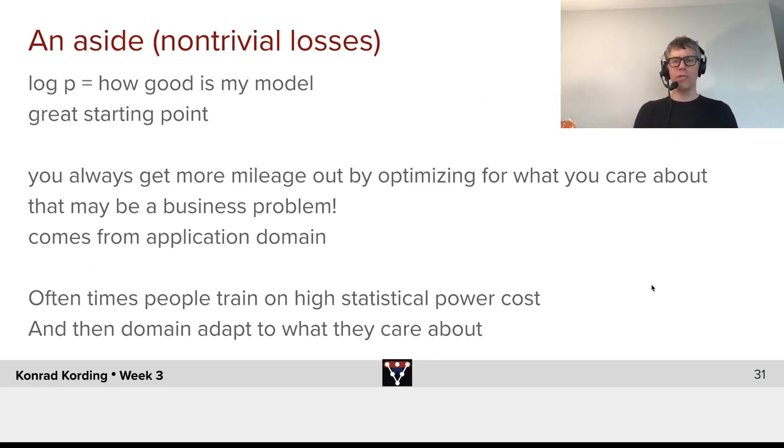So, one standard procedure, and you will generally get a lot of mileage out of that, is you want to, in the end, optimize for what matters. But what you can then do is you can optimize for the log probability first, and then you do a second optimization where you then fine-tune the model so that it's as good as possible at getting as many of the items right as possible. You will generally get some advantage of that.